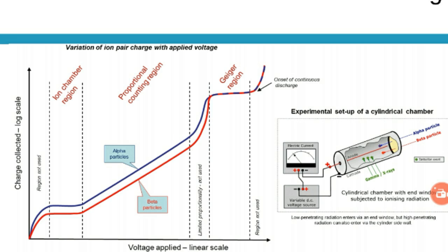In the Geiger-Müller counter, a higher potential is applied compared to the ionization chamber or proportional counter. When the anode voltage is increased beyond the limited proportionality region, the size of the avalanche increases a hundred-fold or more. All the secondary ionization occurs in a very small volume around the anode wire.